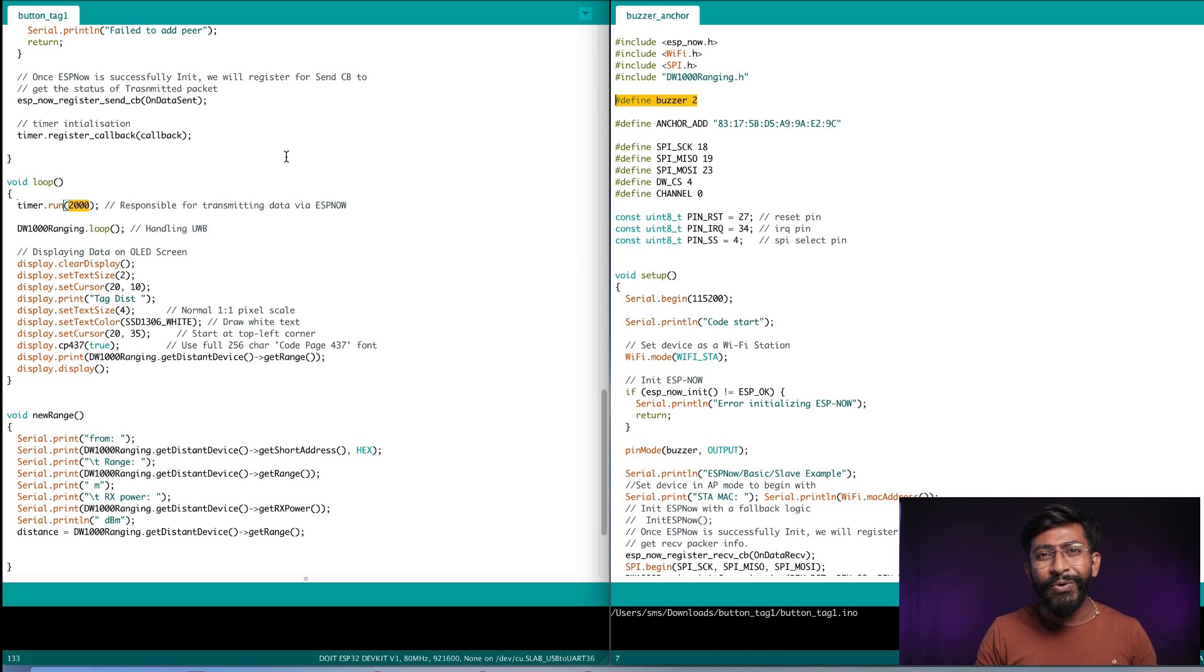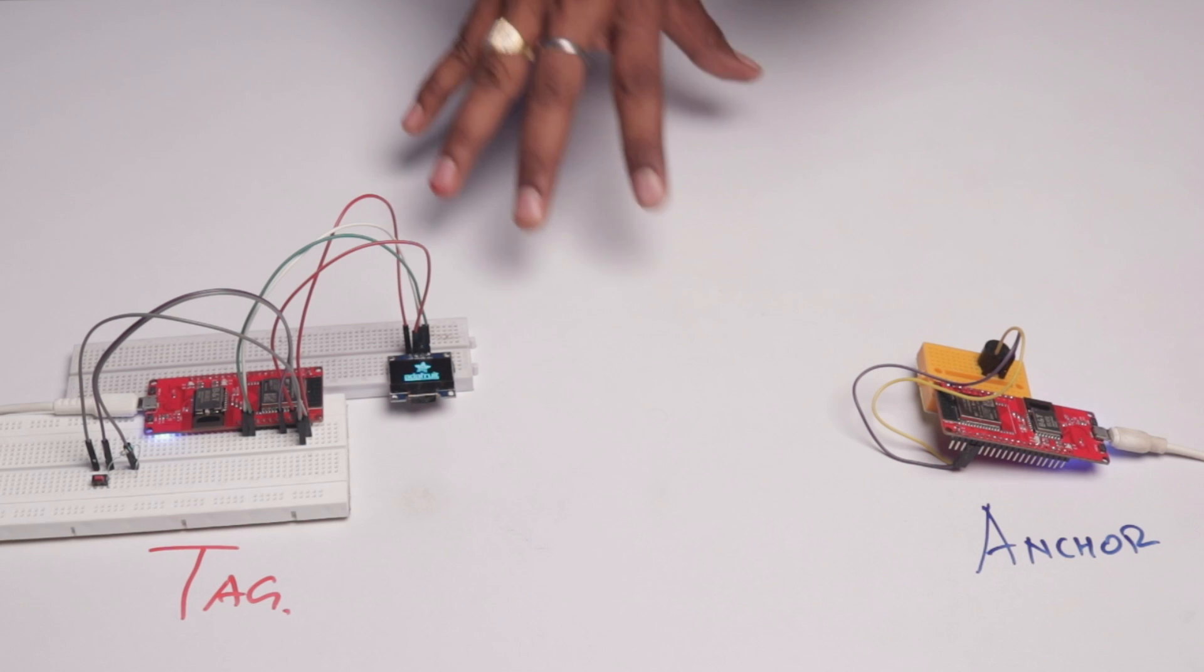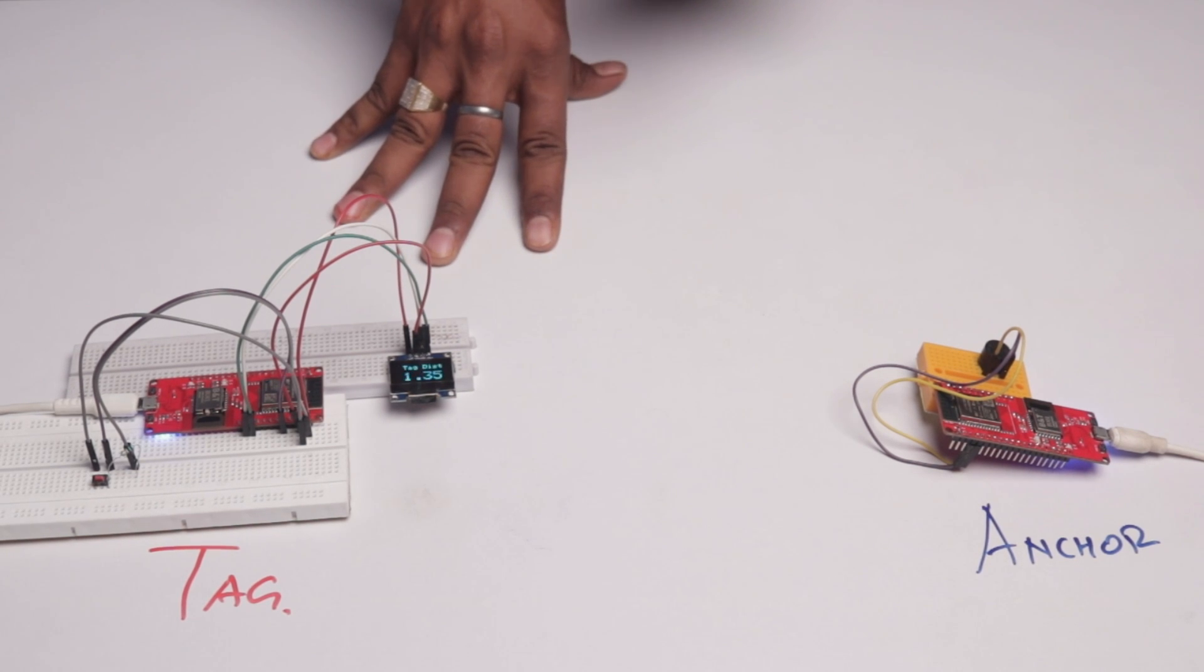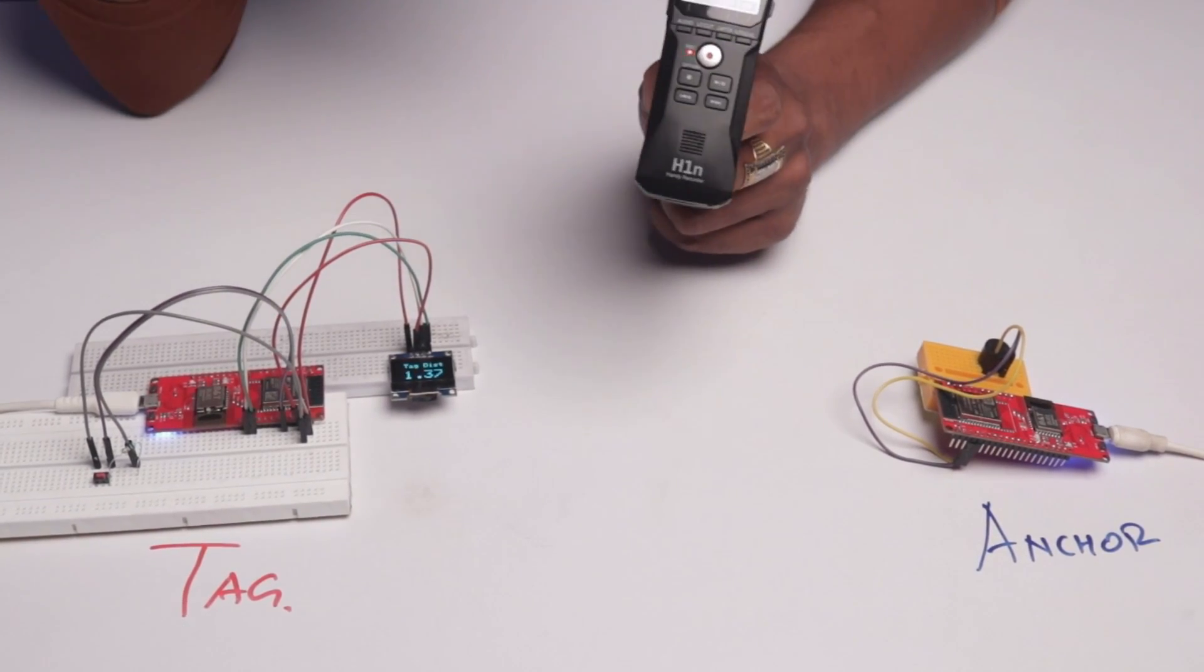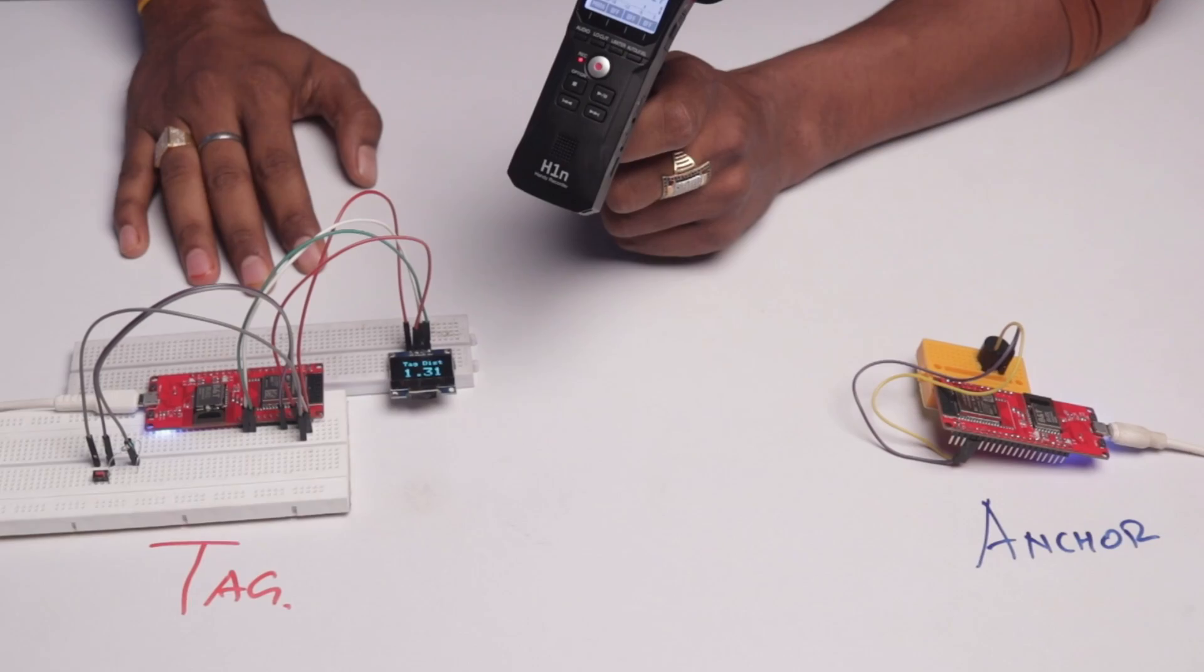Now let's upload each of the code on the respective board. Now let's just see our own made AirTag in action. So we powered on the project and let's see how much distance we are getting here. So we forgot to add the antenna delay parameter in this code. Now antenna delay is such a parameter which is used to calibrate the distance between two UWB devices. You can know more about antenna delay in a previous video about getting started with UWB. But now we added the antenna delay and now let's actually see this project in action.